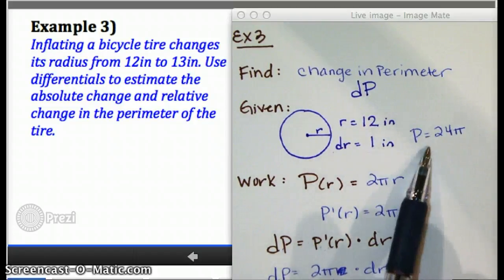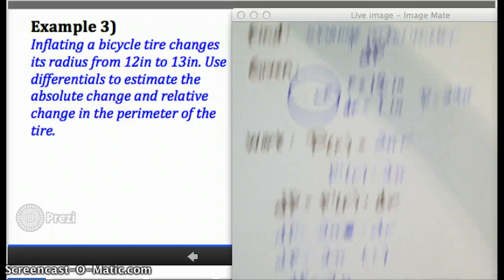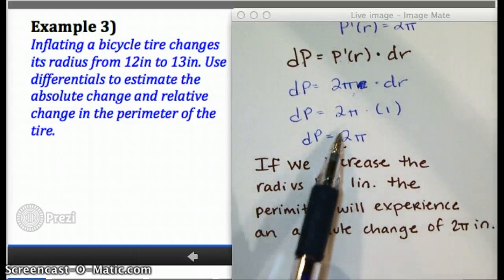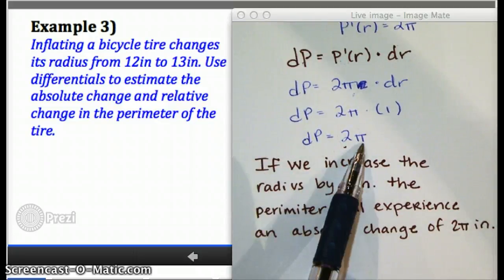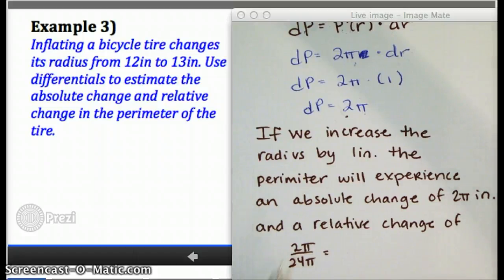Perfect. Yeah, it would be 24π. So if I want to add relative change, which I am supposed to in the problem here, I'm going to take the change in the perimeter and divide it by how big the perimeter was originally. So I'm going to do 2π divided by 24π,